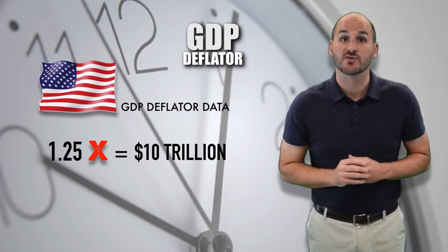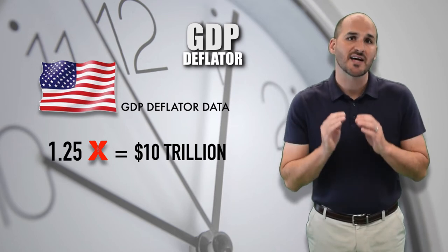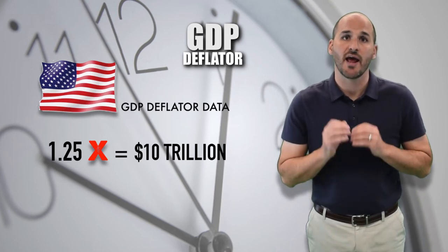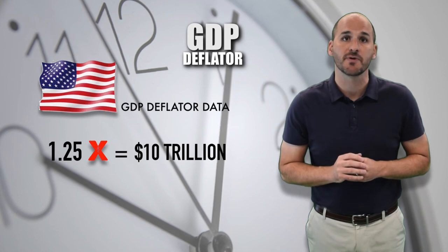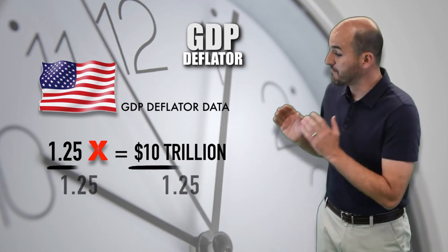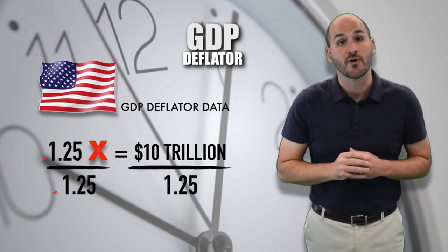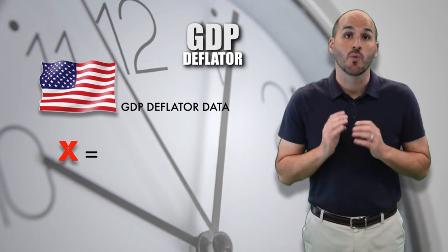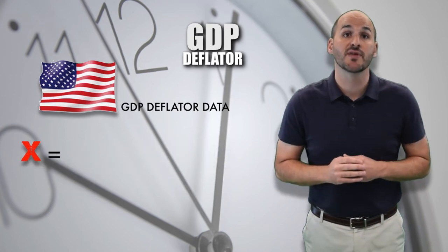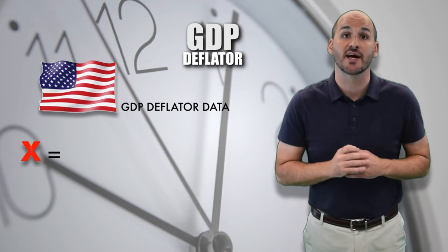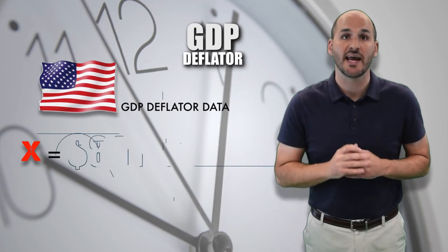Now, in the final step, we must isolate X so we can solve for it and find our 2016 real GDP for the United States. To do so, we divide both sides by 1.25, which gives us our solution. We can determine that the 2016 real GDP in the United States was $8 trillion.